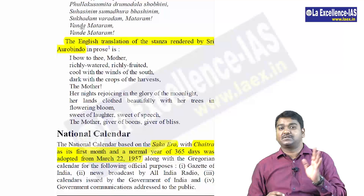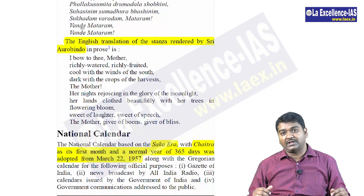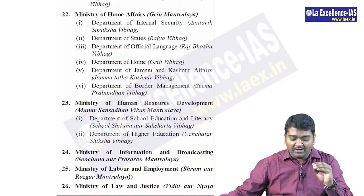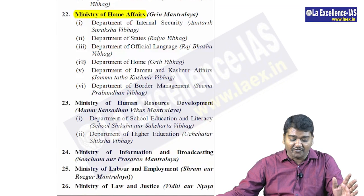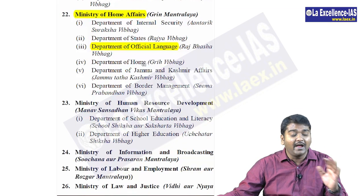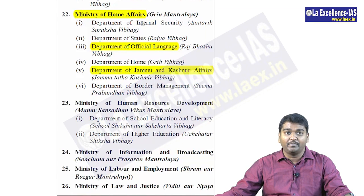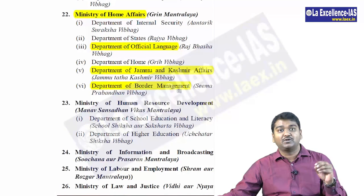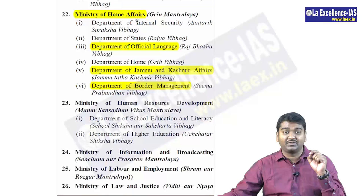The next chapter is polity, where Lakshmikanth is more than enough, but some information not even in Lakshmikanth must be observed here. Please open page number 45. At the end, you have the Ministry of Home Affairs listed. Which departments come under the Ministry of Home Affairs? The Department of Official Language comes under Ministry of Home Affairs — not Ministry of Culture as many would assume. The Department of Jammu and Kashmir Affairs is also under the Home Ministry. Border Management also comes under Home Ministry — not the Defence Ministry. This information is very important.